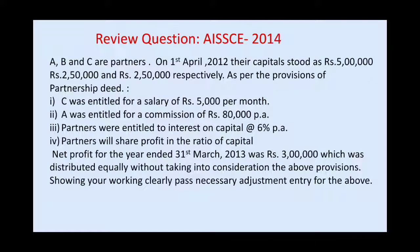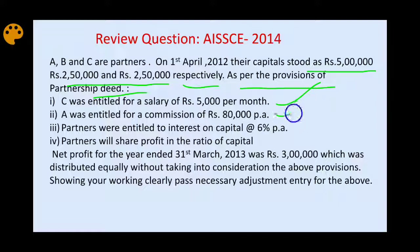Here is a 2014 board question. A, B, C are partners. On 1st April 2012, their capitals were 5 lakh, 2 lakh 50,000, and 2 lakh 50,000 respectively. As per the partnership deed, C was entitled to a salary of 5,000 per month, A was entitled to commission of 80,000. Partners were entitled to interest on capital at 6%. Partners share profit in the ratio of capitals, i.e., 2:1:1. The net profit for the year ended 31st March 2013 was 3 lakh, which was distributed equally without considering these provisions.